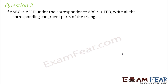Question number two: if triangle ABC is congruent to triangle FED under the correspondence ABC corresponds to FED, what does this mean? This means that point A corresponds to point F, point B corresponds to point E, and point C corresponds to point D.